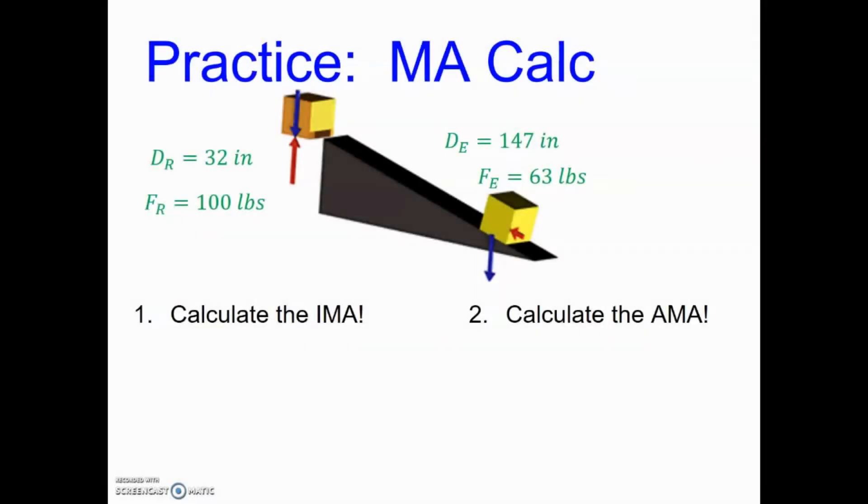So looking at our ramp, our overall goal is to get that box up to a certain height. So now we're going to toss some numbers in there and see if we can do some calculations based on IMA and AMA. So again my goal is I need to get that box up to that pickup or wherever I need it to go.